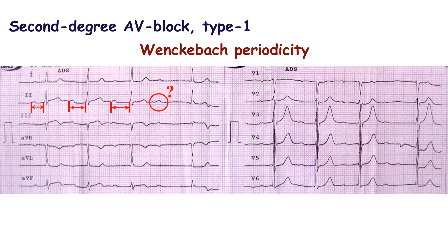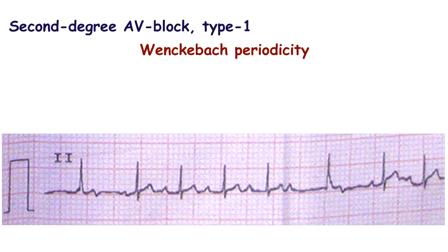We would see such classical periodicity if the escape junctional contraction were absent. It is difficult to put the correct diagnosis in this case because of the too short strip. But if we look at the rhythmogram, we can clearly see the second degree type I AV block with the escape junctional contraction.